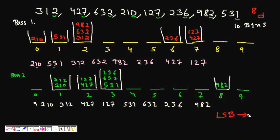In each pass we put the numbers into k different bins. In the decimal number system there are 10 such bins because the digits can be 0, 1, 2, 3, 4, 5, 6, 7, 8, and 9. So we start Pass 1.